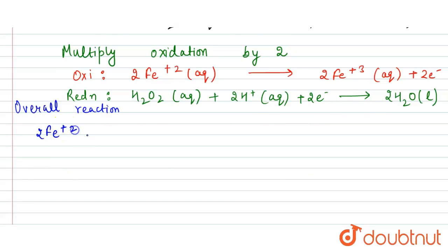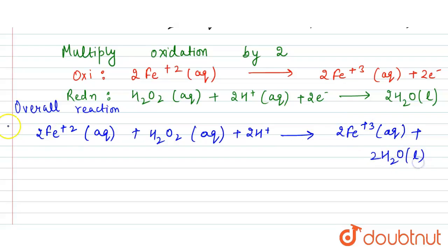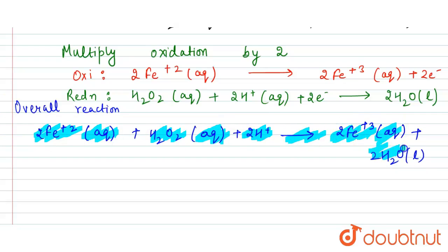The overall balanced redox reaction is: 2Fe²⁺ (aq) + H₂O₂ (aq) + 2H⁺ (aq) → 2Fe³⁺ (aq) + 2H₂O (l). This is our required answer, with the reaction balanced using the ion-electron method.